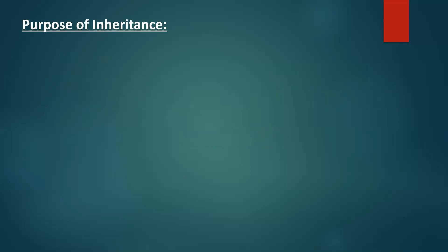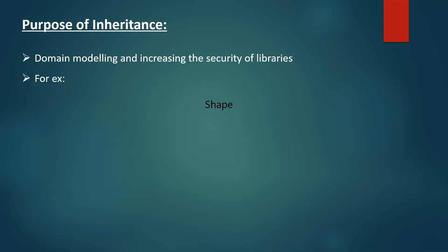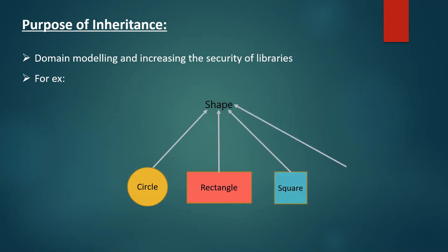But the purpose of inheritance was not always code reusability; it has other purposes like domain modeling and increasing the security of libraries. For example, let's consider shape as a graphics library. Then the possible subclasses would be circle, rectangle, and square. All these are shapes. But if I have a color green, green can also extend the shape class, which is technically possible but doesn't make sense from a domain modeling point of view. So how do we restrict it from extending the shape class?